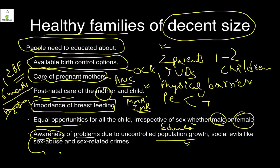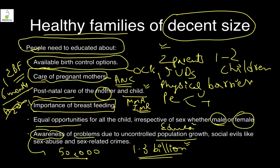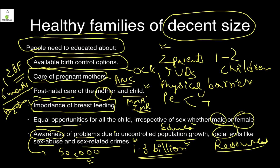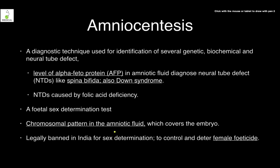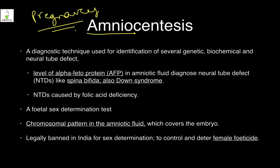For example, MBBS seats in India are about 50,000 but the population is 1.3 billion. If the population were half, competition would also be half. Resources are limited and are not increasing at the same rate as population — that is why various problems arise. Social evils like sex abuse and sex-related crimes also need to be addressed.